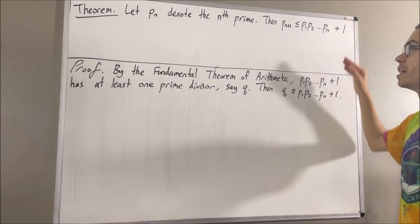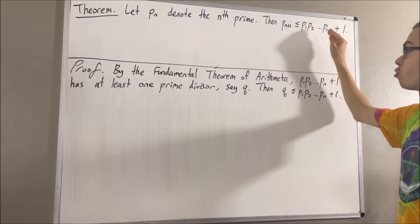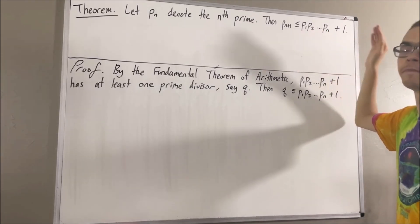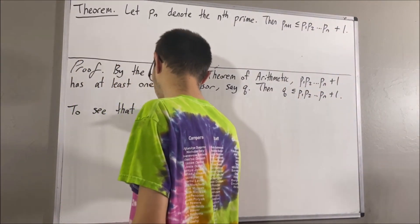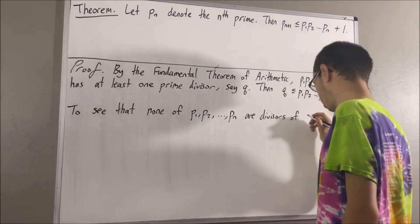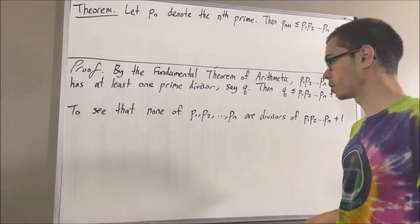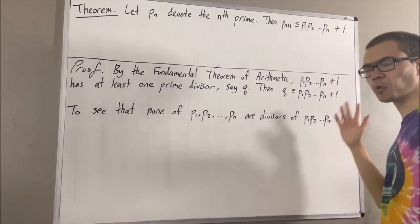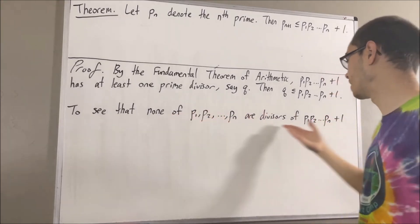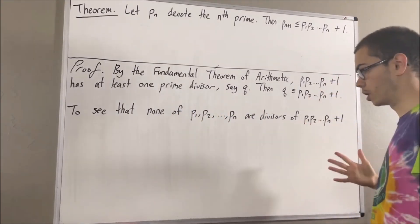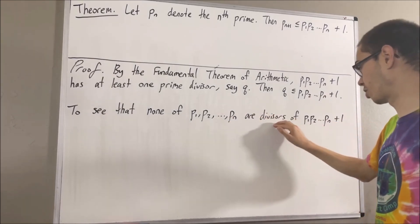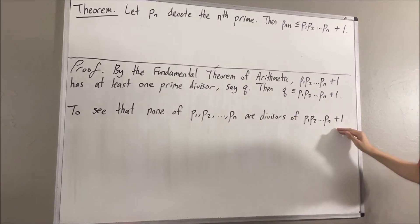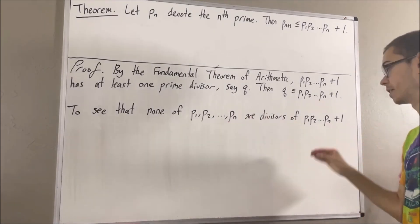And now, we're going to show that none of the first n prime numbers are divisors of this quantity. To see that this is true, let's assume for a contradiction that this is instead not true. So, at least one of these guys is a divisor of this quantity. And we'll say P_i is a divisor of this quantity.